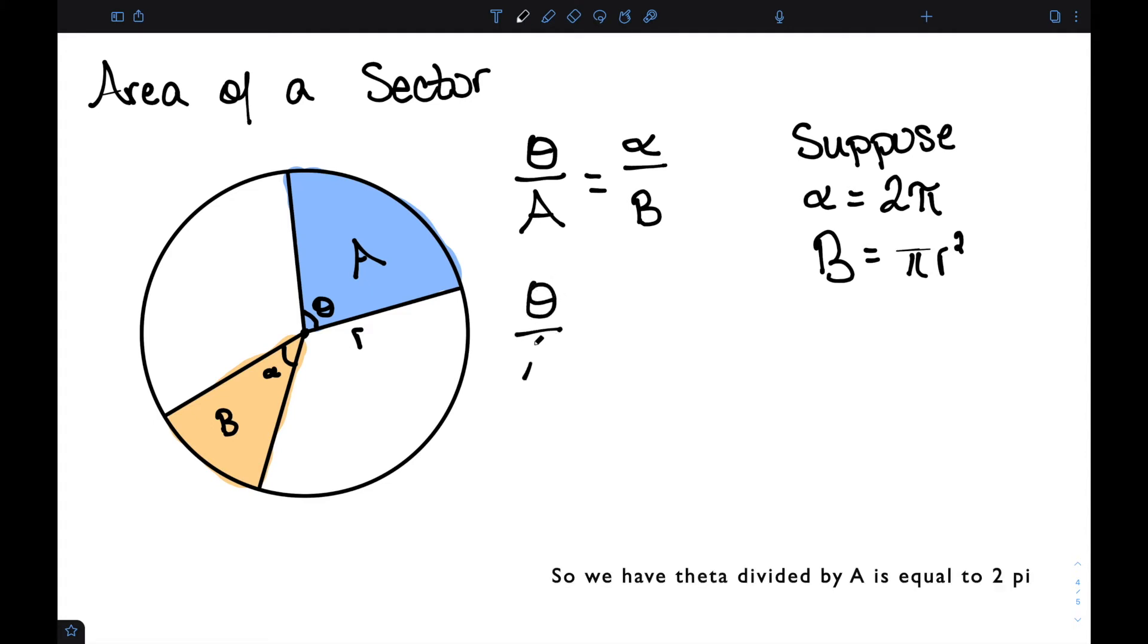So we have theta divided by A is equal to 2 pi divided by pi r squared. Or if we simplify a little bit, theta over A is equal to 2 over r squared.